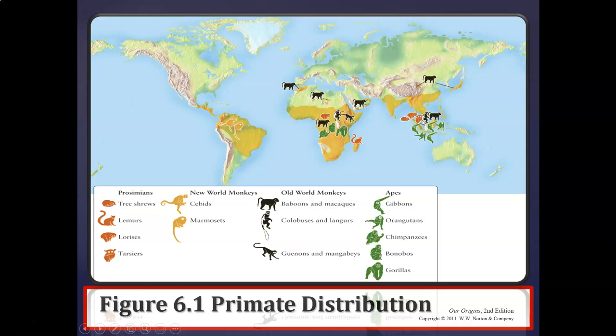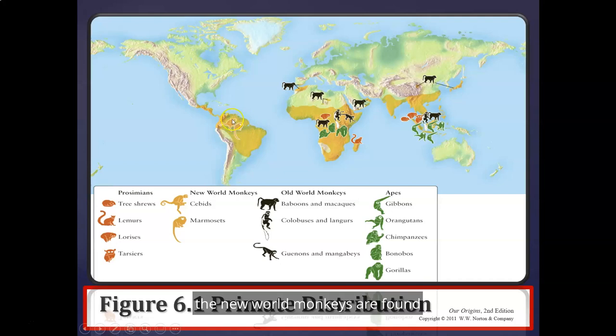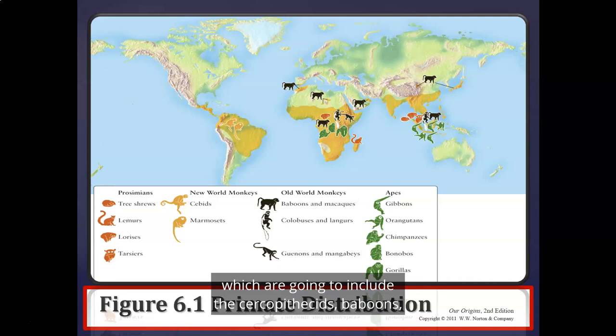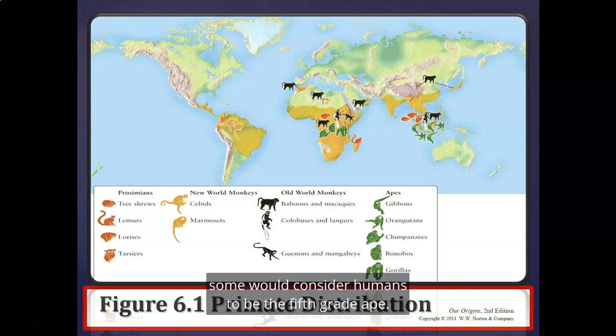New World monkeys are found in South and Central America, thinking of the Americas as the new world and Africa/Asia as the old world. Old world monkeys — the cercopithecoids, including baboons, macaques, colobuses, langurs, guenons, and mangabeys — are found in Africa and Asia. The apes, both lesser and greater, are also found in Africa and Asia. Lesser apes are the gibbons and siamangs; great apes include orangutans, chimpanzees, bonobos, and gorillas. Some would consider humans to be the fifth great ape.